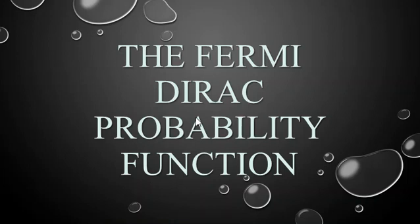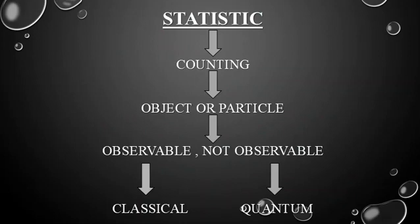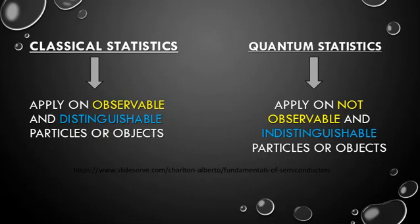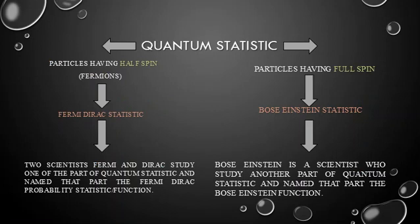Today's topic is the Fermi-Dirac probability function. Statistical mechanics is used for counting particles that are observable or not observable. For observable, distinguishable objects we use classical statistics, and for not observable, indistinguishable particles we use quantum statistics. In quantum statistics there are two classes of particles: those having half spin, called fermions like electrons, and those having full spin, called bosons.